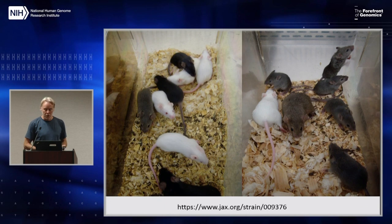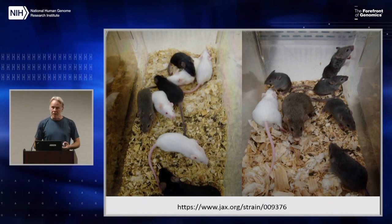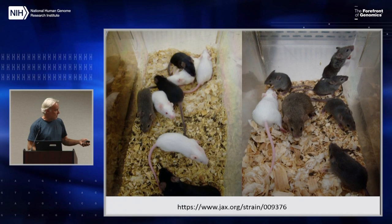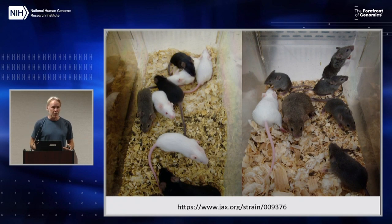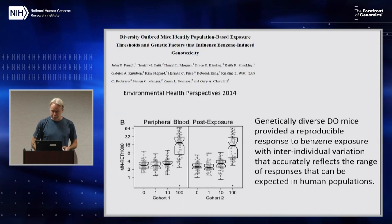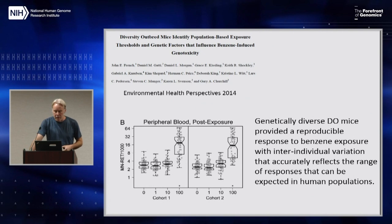If you order strain number 009376 — and that's all you have to do, they're readily available — they're going to come in all flavors. These are actually single litters of DO mice. There's nothing special about them. They're just a lot of mice, and you can phenotype them. In fact, we did that — we've done that in a few studies now.